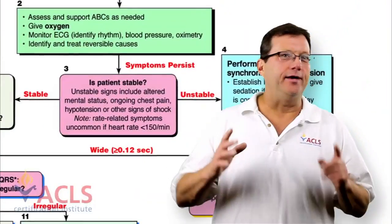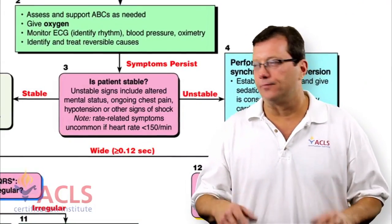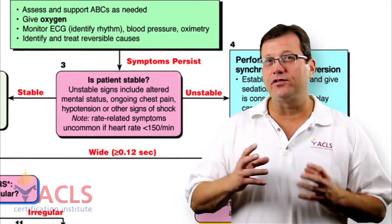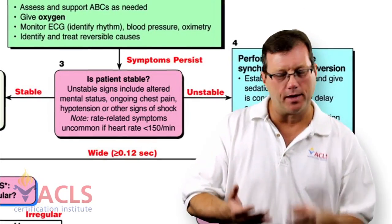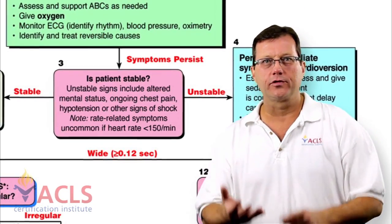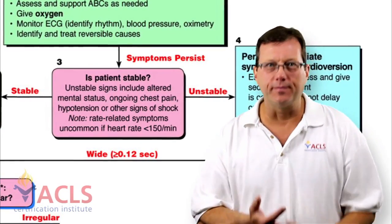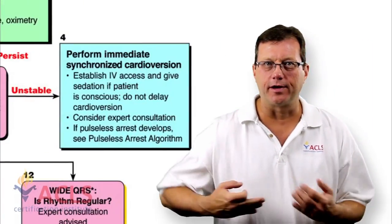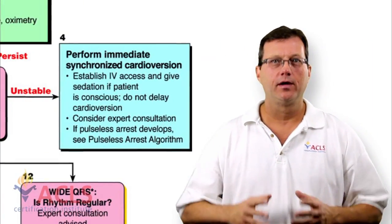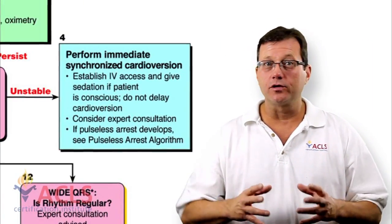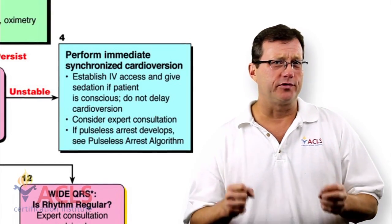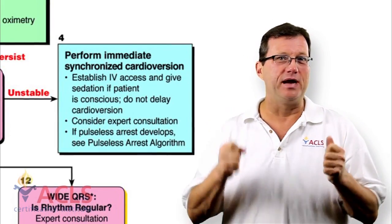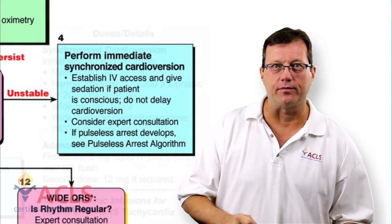Now, any narrow-complex tachycardia — whether it's regular or irregular — if the patient is showing serious signs of shock: low blood pressure, poor color, altered mental status, immediate synchronized cardioversion. Whether the complex is narrow, regular or irregular, a patient with serious signs of shock with this tachycardia is going to receive immediate synchronized cardioversion.